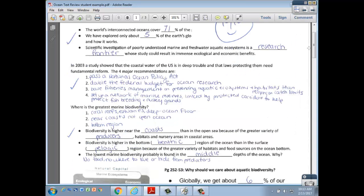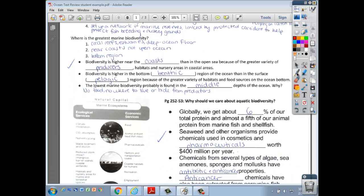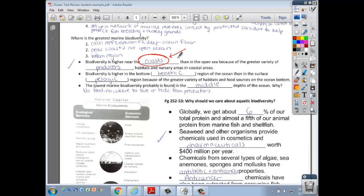There's four legal solutions for the protection of coastal waters. Moving down here, biodiversity is higher near the coast. I need you to understand that that's where most of the life within oceans are, on the coast, because that's where the plants are, where the base of the food chain is. Along with the coasts, if you do go out a little bit into the ocean, it's on the bottom of the ocean floor. We call that the benthic region.